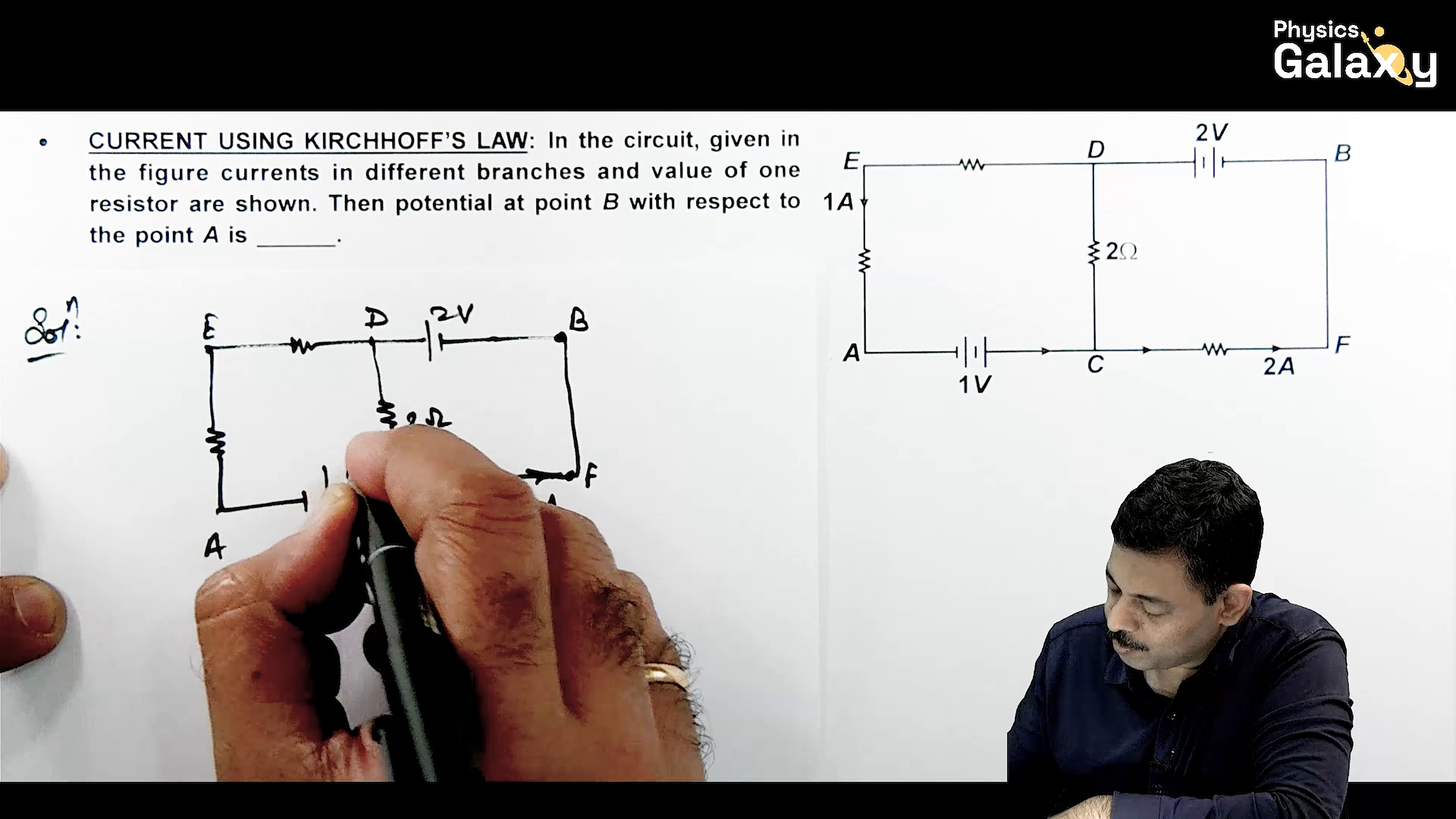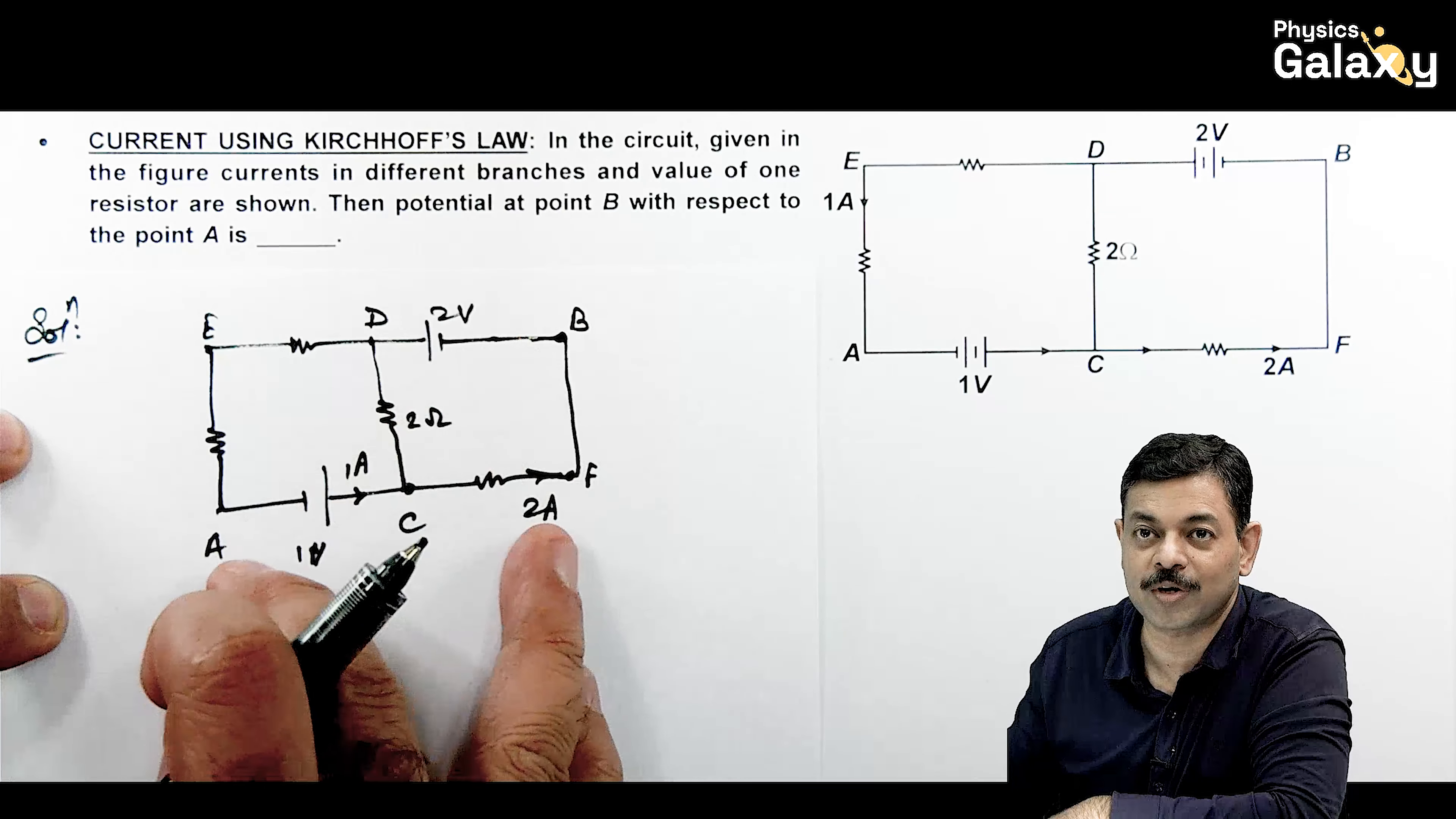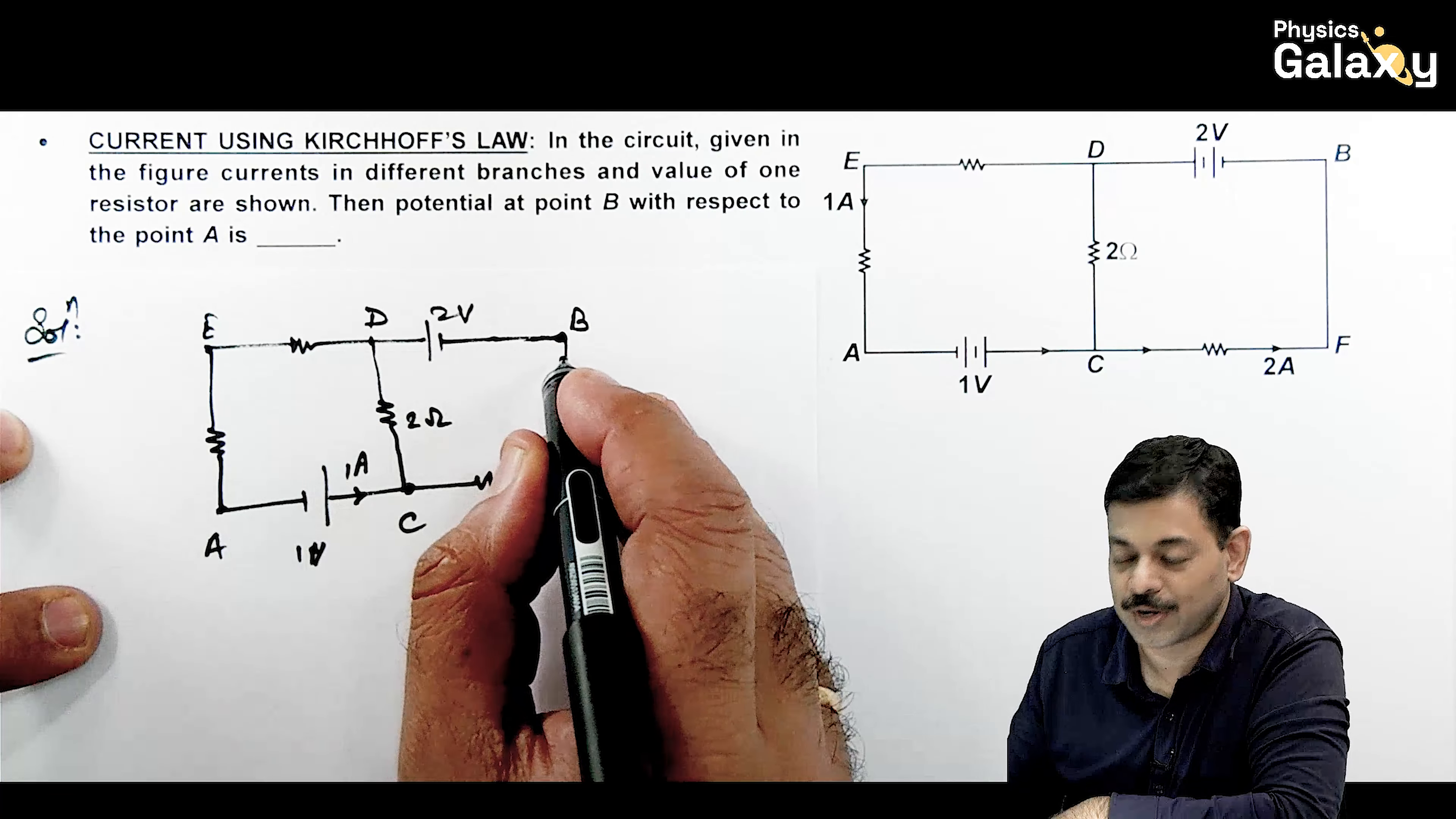This is F. And here 2 ampere current is flowing. And here 1 ampere current is flowing. Nothing else is provided to us. And we are required to calculate the potential at B with respect to A. That means VB minus VA we want to calculate.